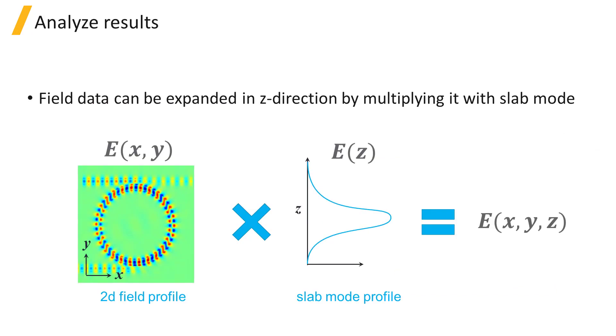After the simulation has been run, the monitor results will be available. The field data can be expanded along Z by multiplying the result from the 2D simulation with the vertical slab mode.